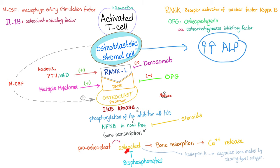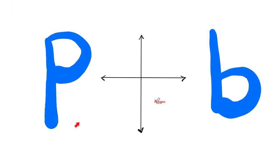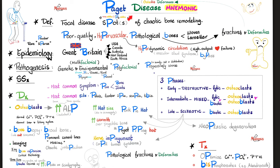Using the P mnemonic, Paget's disease (ostitis deformans) features pathological bones leading to pathological fractures and deformities. It is a focal disease — one spot is called monostotic Paget's disease, multiple spots is polyostotic Paget's disease. The bone is chaotic, poor quality, and hypervascular.